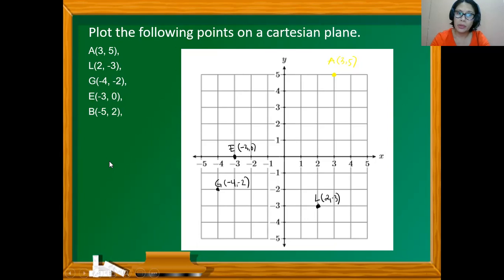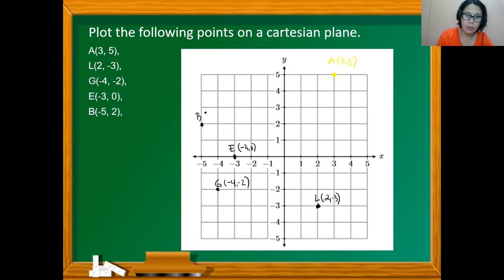Point B is at (-5, 2). From the origin, we count 5 units to the left since the abscissa is negative 5. Then we move up by 2 units since the y-coordinate is 2: 1, 2. So this is point B at (-5, 2).